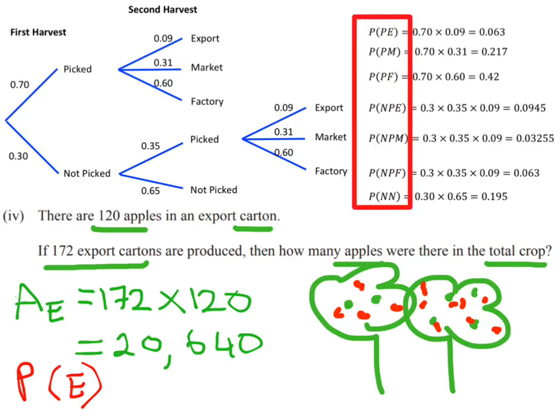Here's our combinations. Which ones meet the criteria for export? The very first one, PE, goes for export. The next one, PM, goes to market. The next one goes to factory. The next one goes for export. Then we've got another market, factory, and not being picked at all. In terms of probabilities of being picked for export, we've got two possible choices there.